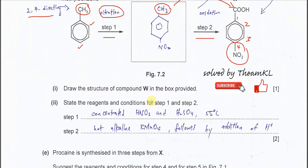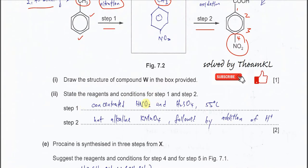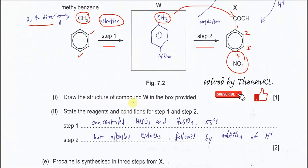For step 1 — the nitration — we need to use the nitration mixture: concentrated HNO₃ and concentrated H₂SO₄, at a temperature of 55°C. The nitration will occur and the nitro group will go to the para (fourth) position.